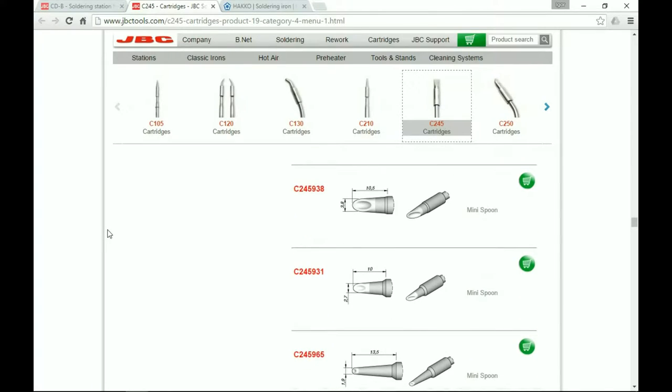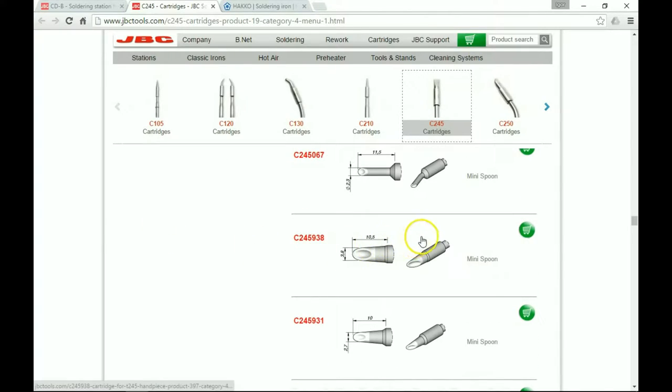Let me see here. These they call mini spoon tips where there's a little bevel, a little recess in the bevel of the tip. I've also heard them called hoof tips or well tips, but we'll talk a little bit more about these later.